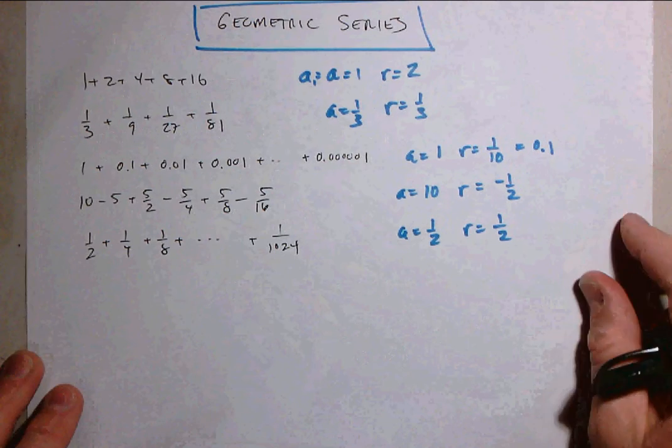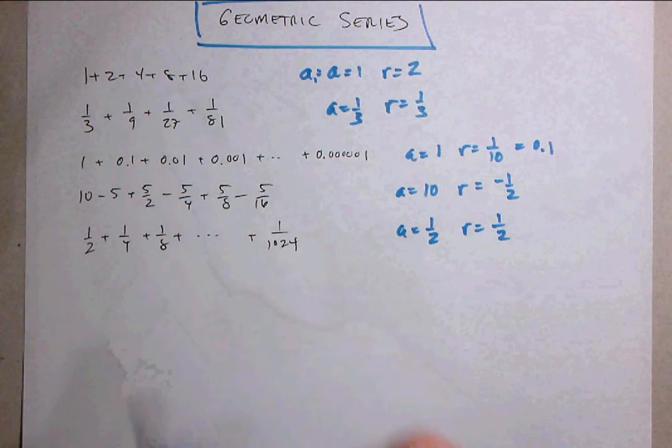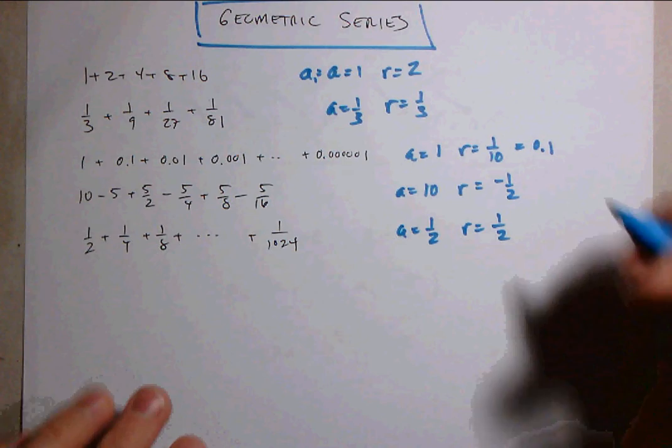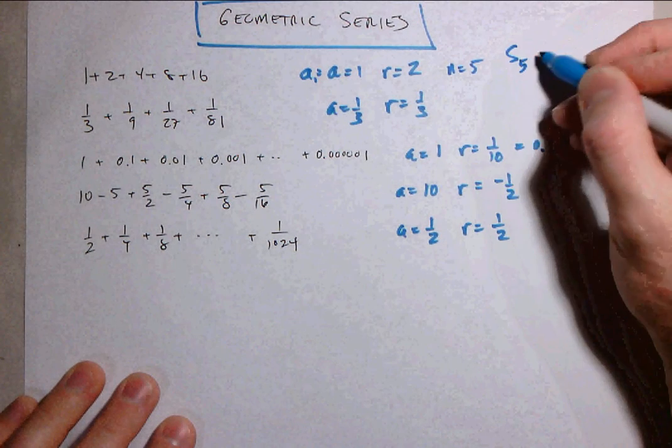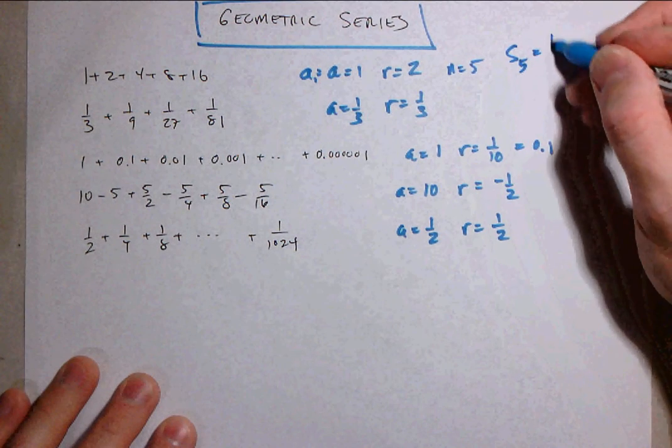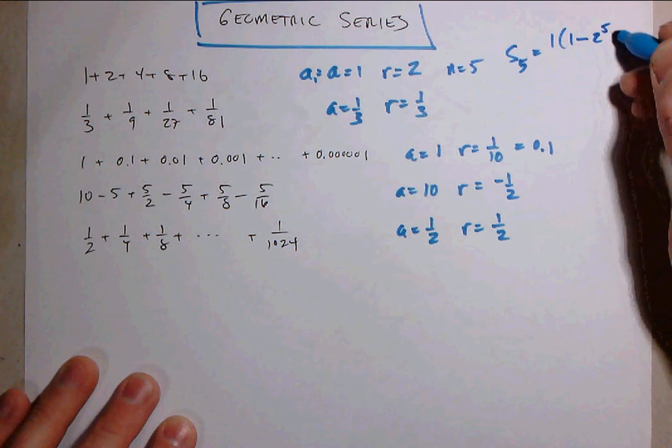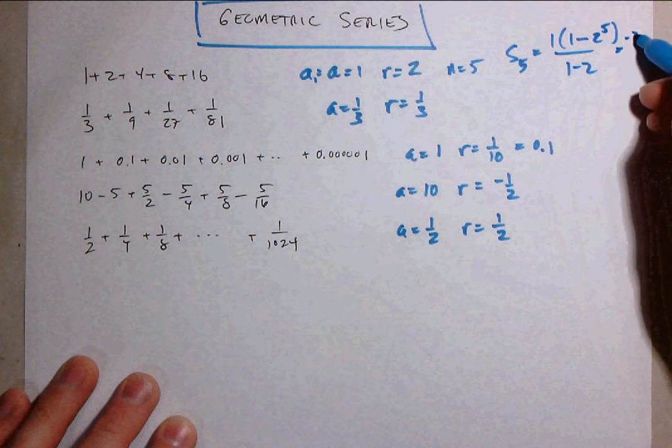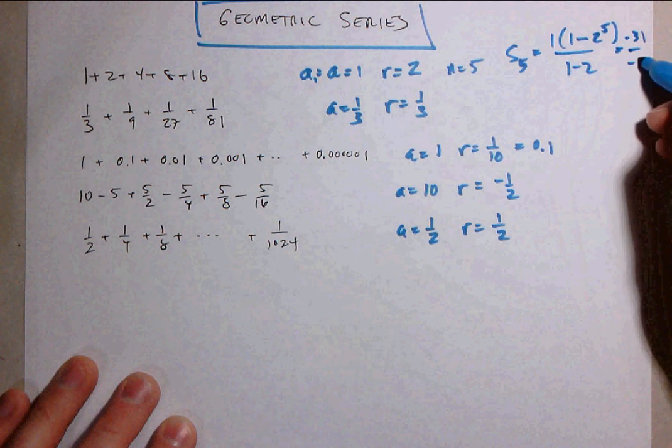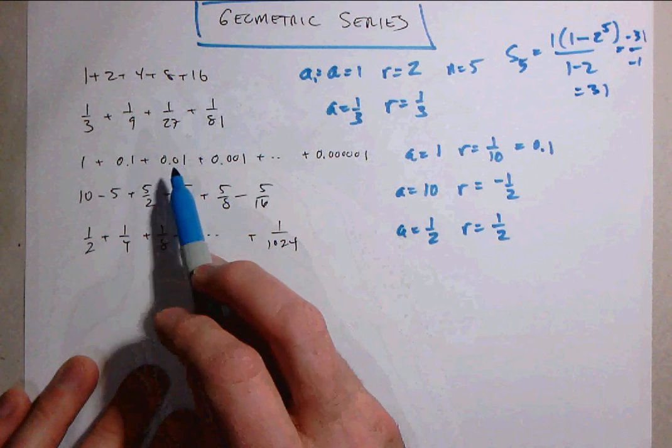So we can go back here and look at some of these series. In this case we have five terms. So n is 5. And so s sub 5 should be the first term times 1 minus the common ratio to n over 1 minus the common ratio. Of course that's negative 31 over negative 1 which is 31 just as you would expect when you add these all up.